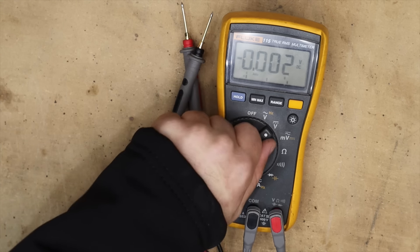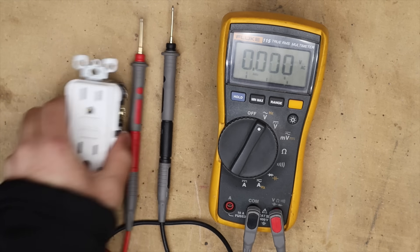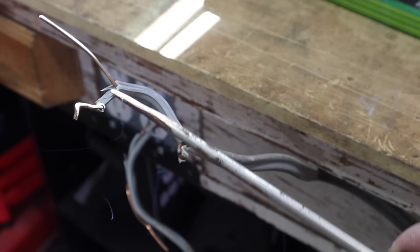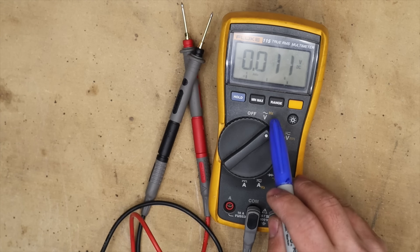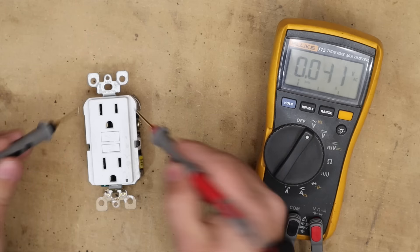Now alternating current is what you'll usually find in the outlets of your house. So before testing our outlet proceed with extreme caution. High voltage can cause death and serious injuries. So to test this set your meter to voltage alternating current.